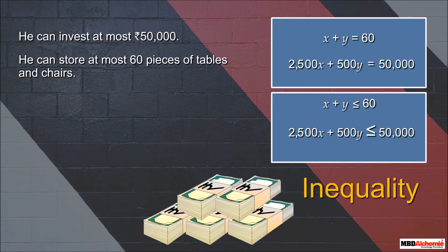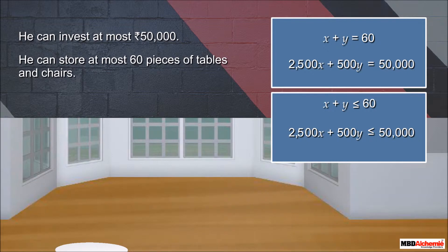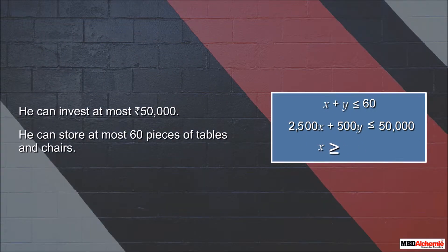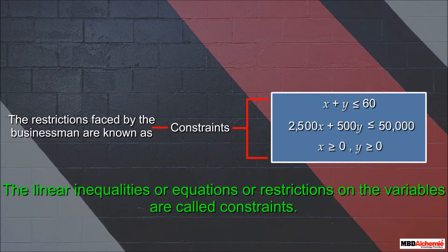Since the number of tables and chairs cannot be negative, two more inequalities are formed: x ≥ 0 and y ≥ 0. The restrictions faced by the businessman are known as constraints. The linear inequalities or equations or restrictions on the variables are called constraints.